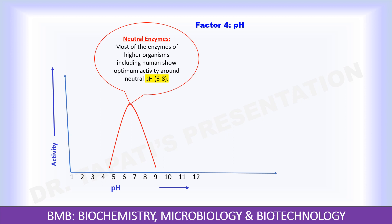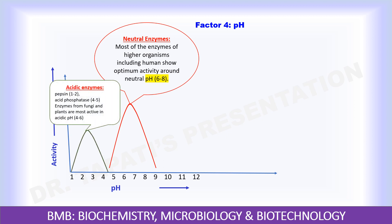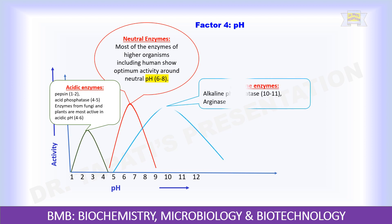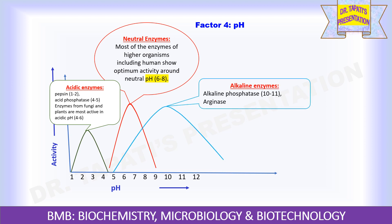However, there are many exceptions. Some enzymes are acid-stable — for example, pepsin is active at pH 1–2, and acid phosphatase has an optimum pH of 4–5. Enzymes from fungi and plants are mostly active in acidic pH between 4 and 6. Whereas some enzymes are most active in alkaline conditions — for example, alkaline phosphatase is active at pH 10–11, and another example is the enzyme arginase.